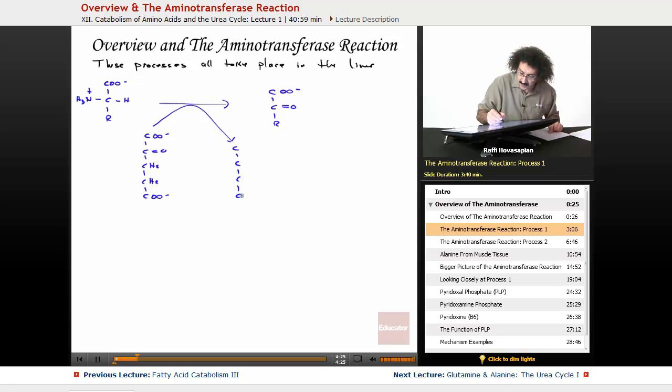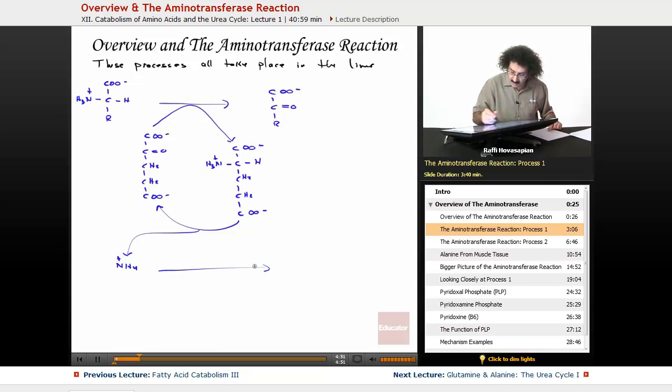And this is going to be OO minus there. And then we have 1, 2, 3, 4, 5. We have COO minus, we have H. Let me go ahead and put this NH3 plus here. CH2, CH2, CH2, COO minus. Let me go ahead and finish up the drawing here. This is going to be the NH4 plus. This is going to be excretion. And it's going to be either NH4 plus, urea, or uric acid, depending on the particular organism that we're talking about. For us, it's going to be urea. This is glutamate. This molecule right here is the alpha ketoglutarate.